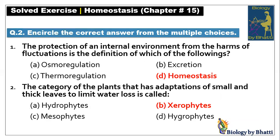Then the MCQs come. Encircle the correct answer from the multiple choices. If we see on the right: the protection of an internal environment from the harms of fluctuations is the definition of which of the following? This is a homeostasis definition, so the answer would be D option, homeostasis.